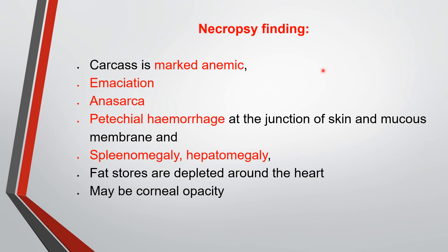Some characteristic post-mortem findings include: the carcass is markedly anemic and emaciated; there is ascites — accumulation of fluid or edema throughout the body; petechial hemorrhages on mucous membranes due to toxemia, generally at the skin-mucous membrane junction; splenomegaly and hepatomegaly due to phagocytosis; fat stores depleted around the heart; and there may be corneal opacity.